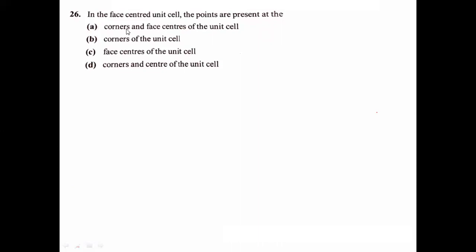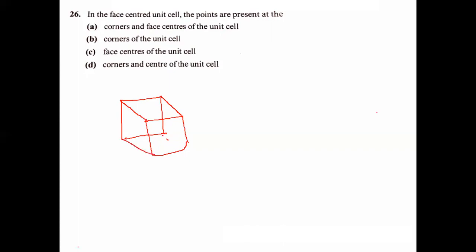In a face-centered unit cell, where are points present? In FCC, atoms are present in the center of every face and on the corners. So atoms are at the corners and face-centers of the unit cell.